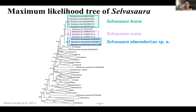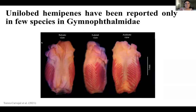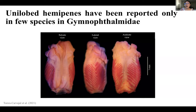The phylogeny also shows that the sister clade of Selvasaura is a clade formed by Potamites and Dendrosauridium, and all three taxa — Selvasaura, Potamites, and Dendrosauridium — are examples of a cis-Andean radiation of Cercosaurinae lizards. We also prepared the hemipenes of this species and found they are unilobed, unlike Pholidobolus where the hemipenes were bilobed. Unilobed hemipenes have been reported in only a few Gymnophthalmidae species across different subfamilies, making this potentially an important trait to identify these species in museum collections.